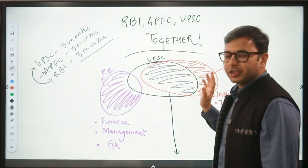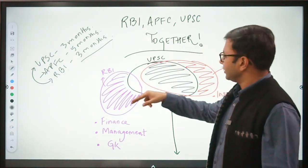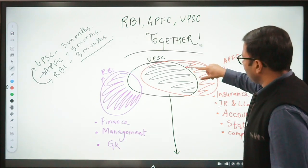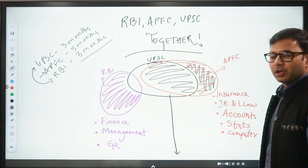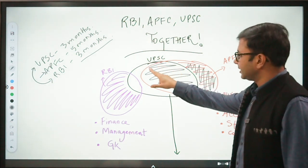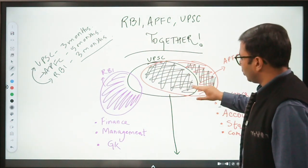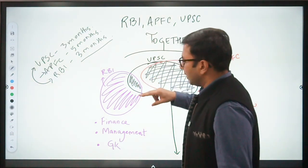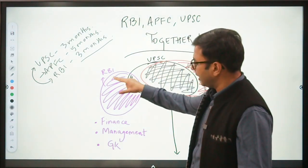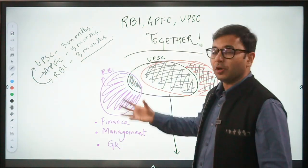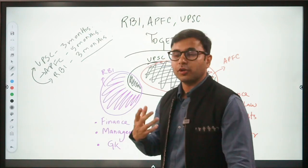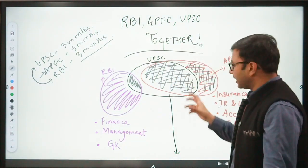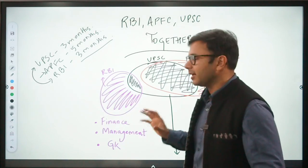In the center of black color, you can see the UPSC circle, left RBI circle, and right APFC circle. This part of the syllabus of APFC is specific, whereas this part is overlapping with UPSC syllabus. Similarly, this part of RBI syllabus is overlapping, which is comparatively a smaller part, whereas this major part is not overlapping in terms of its importance, weightage, and depth of study required.